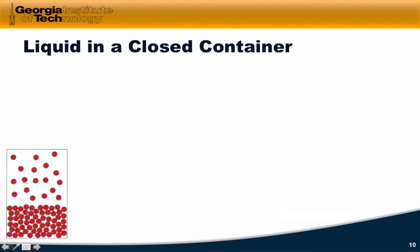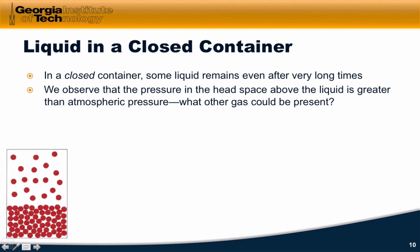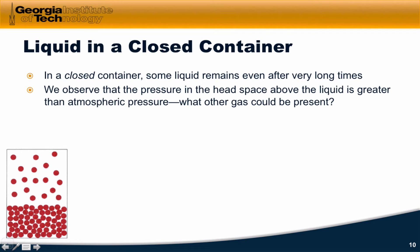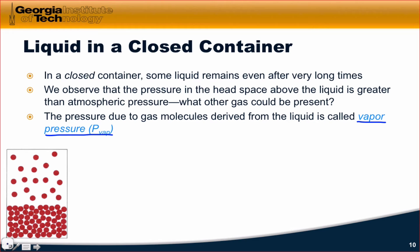What happens when we take that liquid, say that glass of water, and pour it into a closed container like a thermos? In a closed container, empirically what we'll notice is that some liquid remains even after very long times. There's something interesting that happens in the head space above the liquid. If we put a pressure gauge in that empty space above the surface of the liquid, we'll notice that the gas that evaporates from the surface of the liquid actually exerts a pressure. The pressure in the head space above the liquid is greater than atmospheric pressure, due to the gas molecules that have formed from evaporation from the liquid surface. This pressure that comes from collisions of the gas molecules that were formerly liquid with the walls of the container is called vapor pressure, and for physical equilibrium this is really the foundational concept.